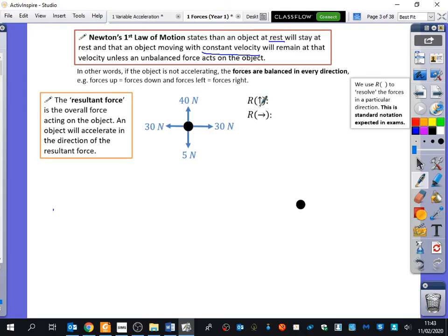So just a little bit about notation that we've got here. This R with an arrow in it, we use it to resolve the forces in a particular direction. This is the notation that you would expect in an exam. The word resolve means what I'm about to do here. So if I resolve in the upwards direction, so I've got something that's going 40 up, but it's going 5 downwards, the overall force that we would say going in the upwards direction is 35. We're thinking about the forces which are going upwards, and the force which is opposing it is 5.